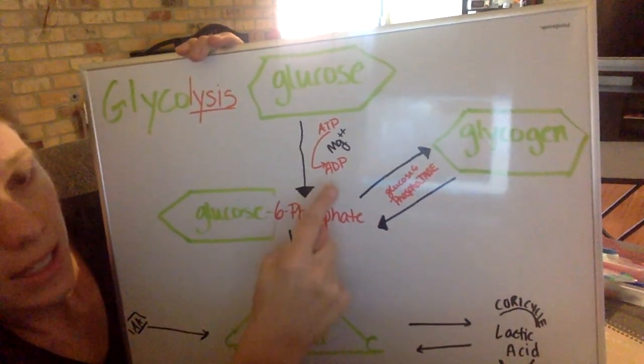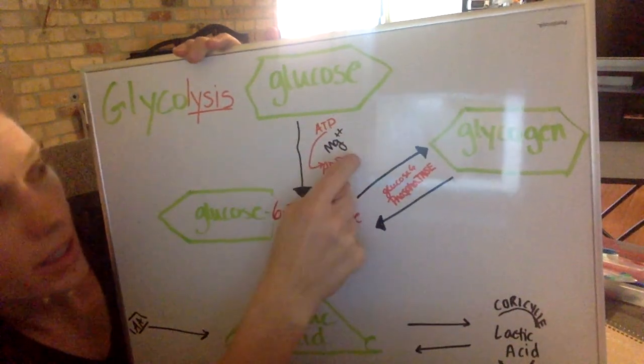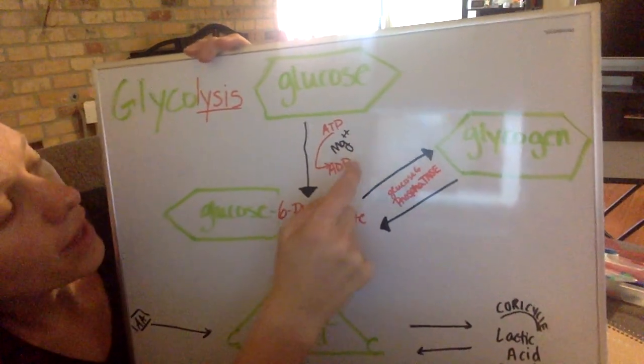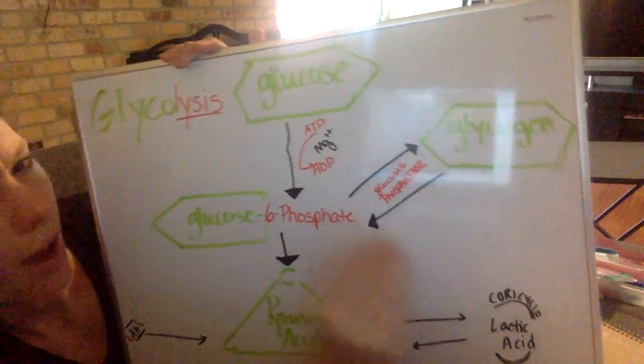We need magnesium. When we're going from ATP to ADP, magnesium is going to be involved.